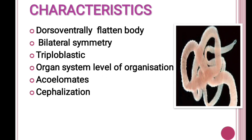Their body symmetry is bilateral symmetry. This is the first group in the animal kingdom where we see bilateral symmetry. They are triploblastic, that means their body develops from three germ layers: the ectoderm, mesoderm, and endoderm.